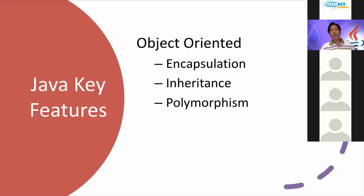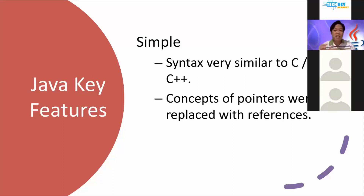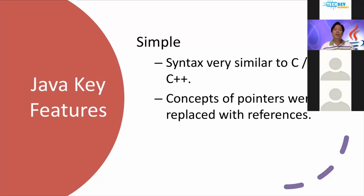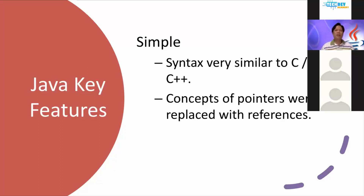Another feature I enjoy in Java is that it's very simple to learn. The syntax is similar to C++. There are some concepts in C and C++ that are very tedious and hard to learn, like the concept of pointers. When I was a student in college and my teacher talked about pointers, I would always ask if I could use arrays instead, because pointers are quite challenging to understand. But in Java, the good news is we don't have pointers anymore — we have reference values instead. So if you already have a background in C and C++, Java should be a very easy language for you to migrate to.